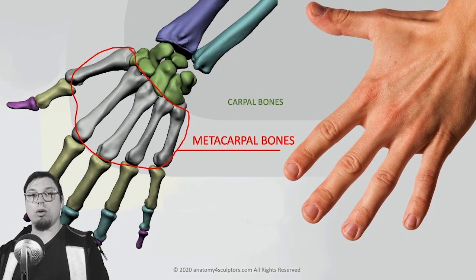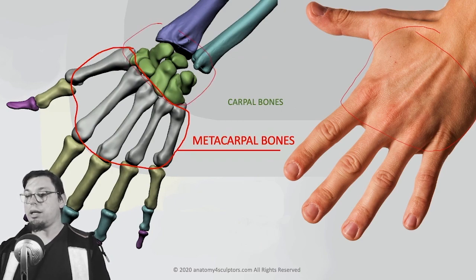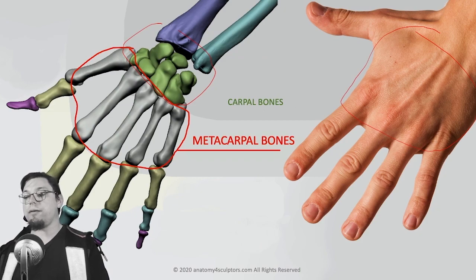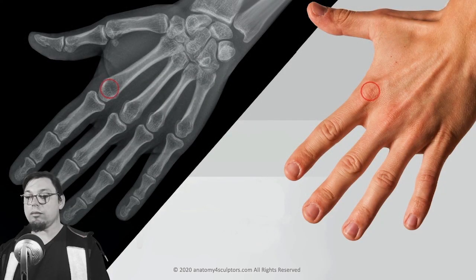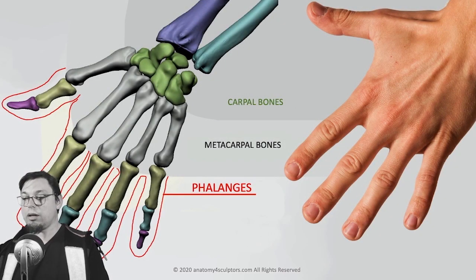The next bones are the metacarpal bones — those are like the invisible phalanges. This is the part between the wrist and the fingers. There are five metacarpal bones, and the most visible part of them are the knuckles. The phalanges actually begin later, past the knuckles.